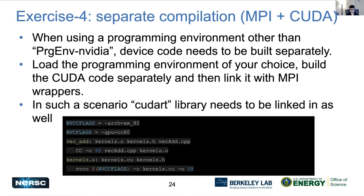In exercise four, we again come back to separate compilation. Here we have the MPI library and the CUDA kernels located in a separate file. You can again use any programming environment because you're building the CUDA code separately using NVCC and then linking it using the compiler wrappers. Compiler wrappers can come from any programming environment. You could still build the code using G++ directly, but then you'd need to link in a bunch of libraries — for example, the CUDA runtime library — and since you don't know where they are located, it's always recommended to use the compiler wrappers because they take care of everything and make the compilation line much simpler.